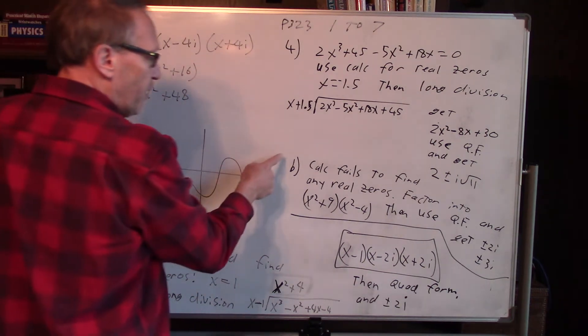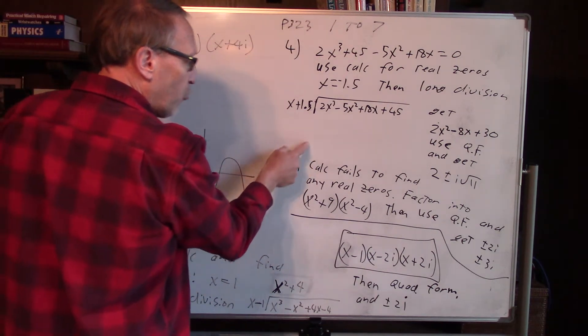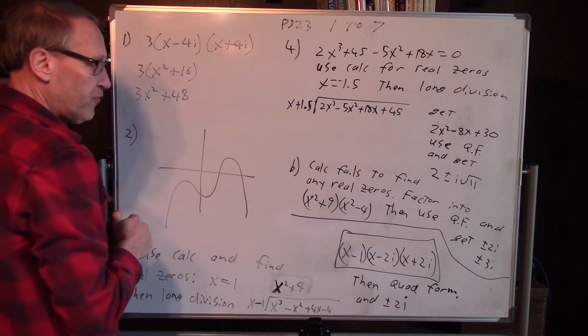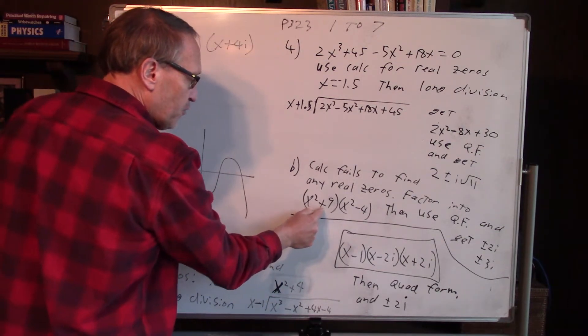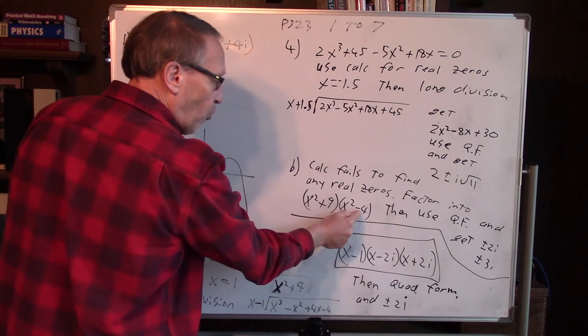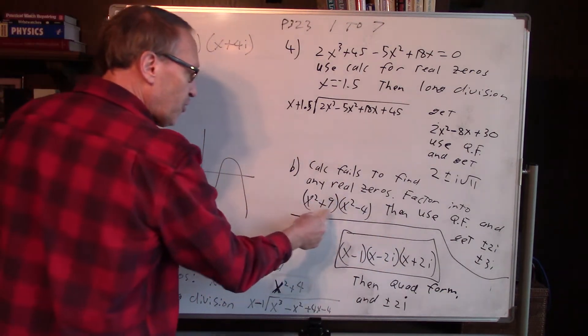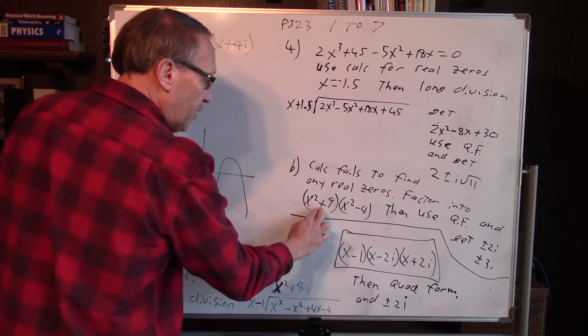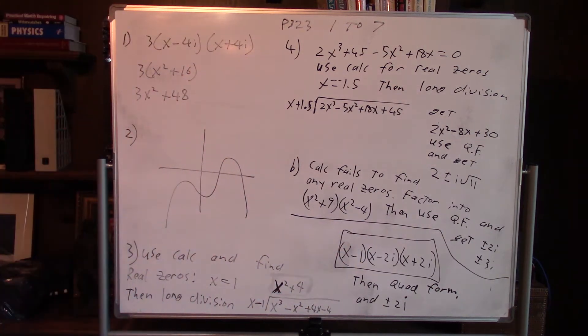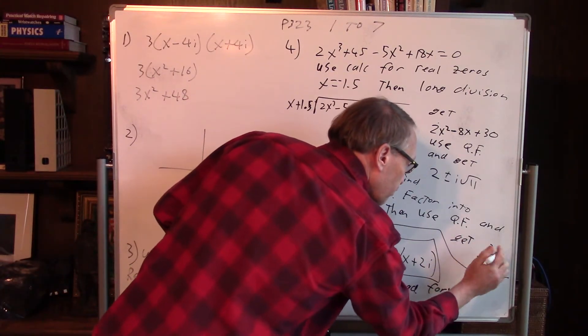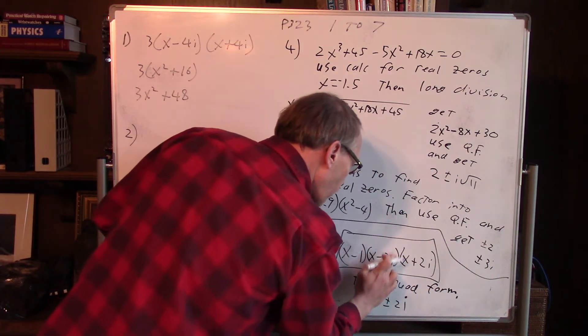Part B says find all the answers. Calculator fails to find any real zeros. So this one you have to get creative with. You've got to factor this way: x squared plus 9, x squared minus 4. If you move everything to the left again, factor it, and you can factor it like this. Then you can solve these two expressions.